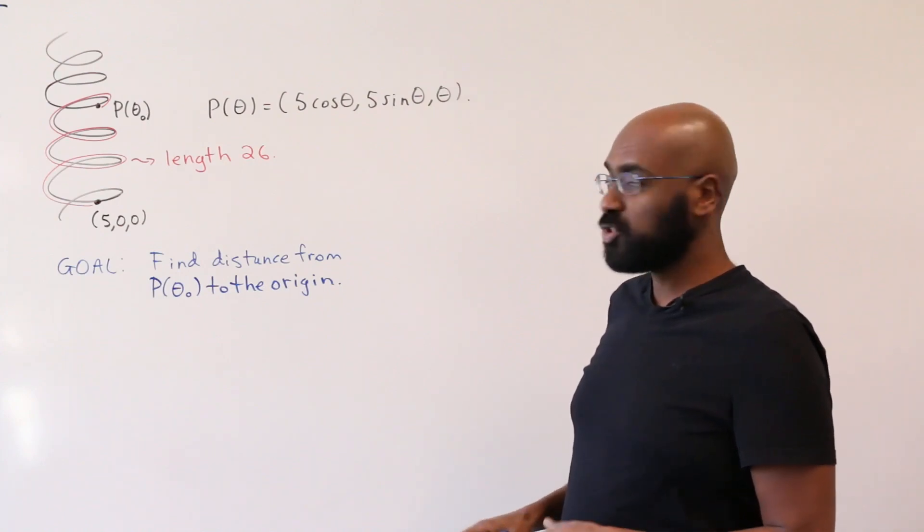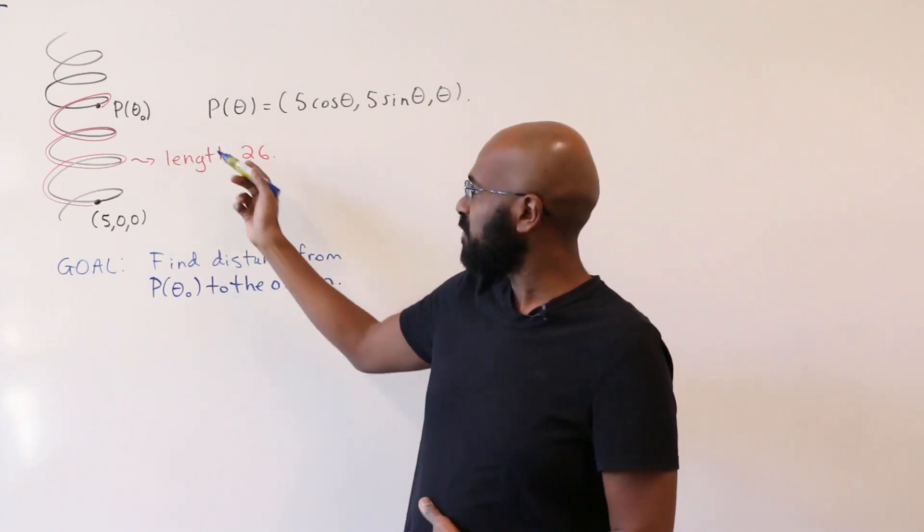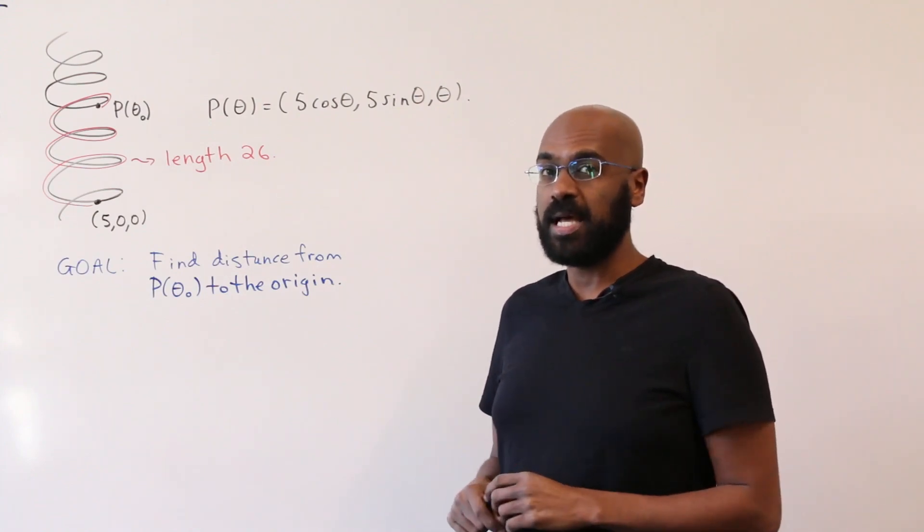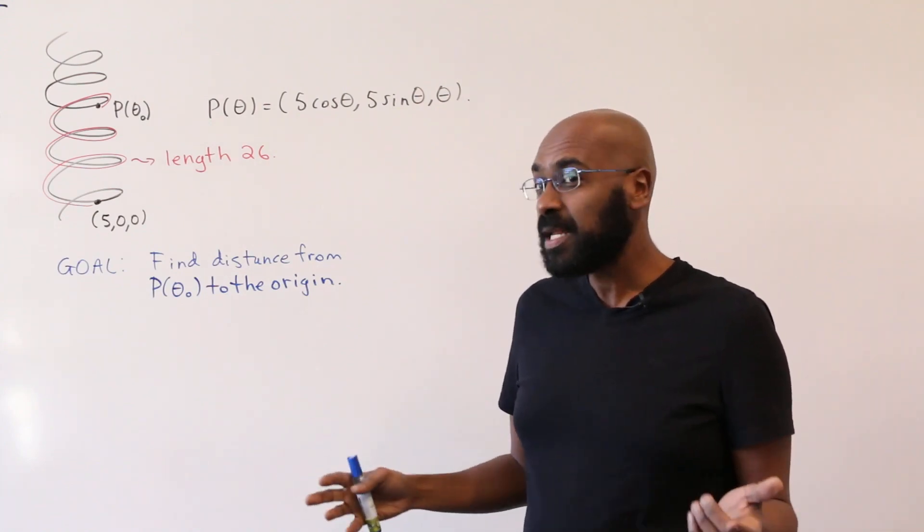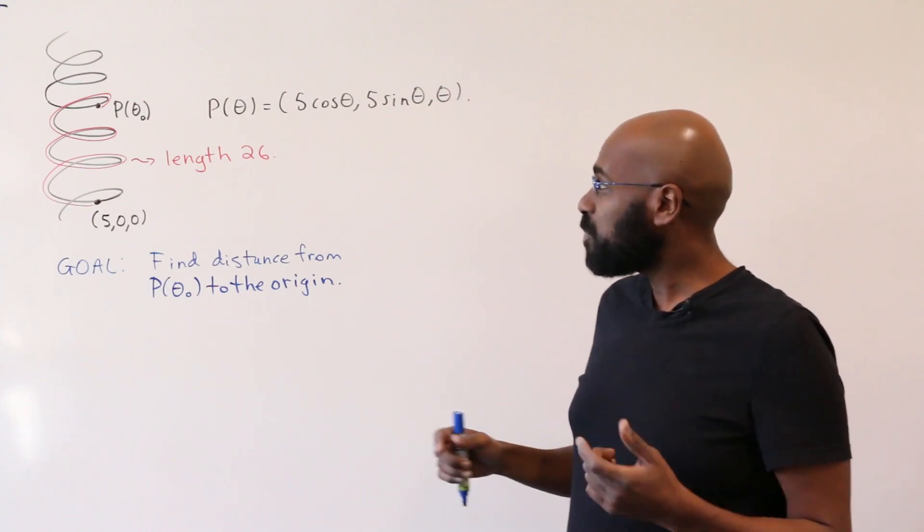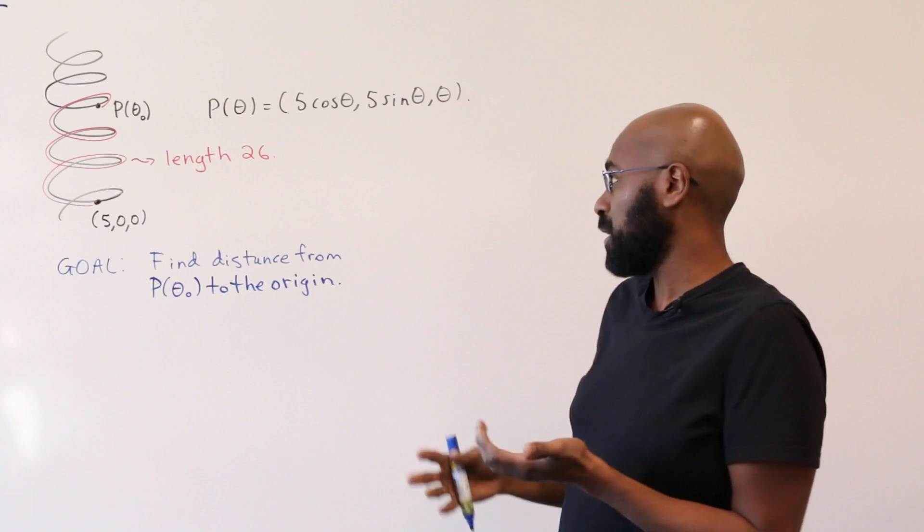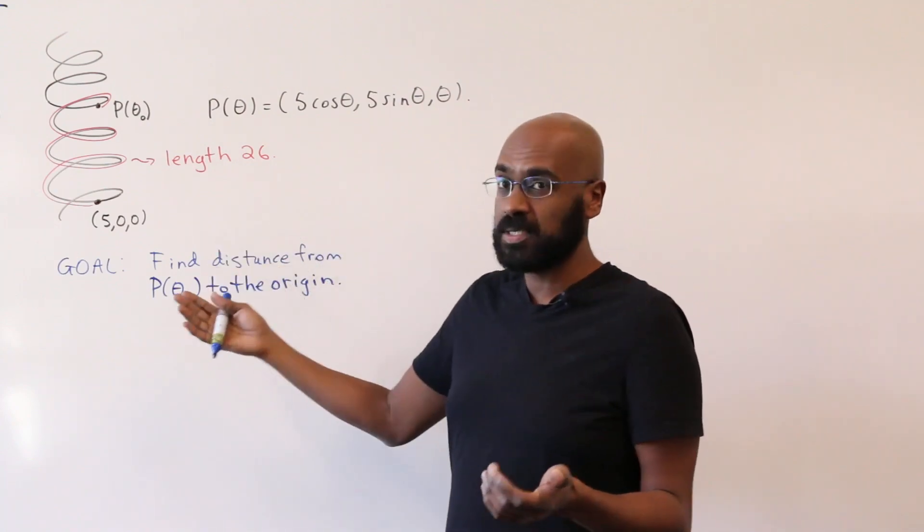So we can start by actually trying to find out what this point is given this length information. It turns out this question was only answered correctly by 24% of the participants, and I think a big part of the reason why is when you're on a test like this you might just forget what the formula for arc length is in 3-space.